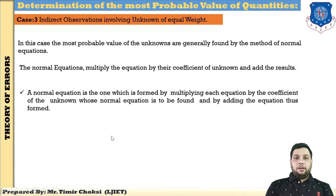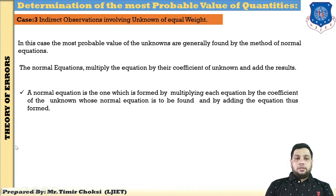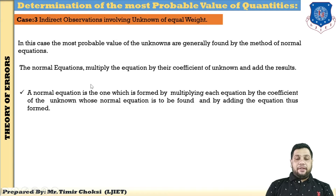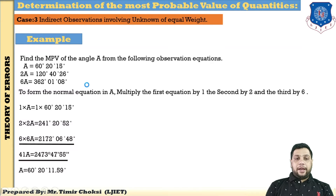Case 3 is indirect observation involving unknowns of equal weight. In this type of case, you cannot directly find the arithmetic mean or weighted arithmetic mean. Here you must find the most probable value by the method of normal equations. The normal equation is formed by multiplying each equation by the coefficient of the unknown and adding the results. First I will explain by example, then repeat the definition.